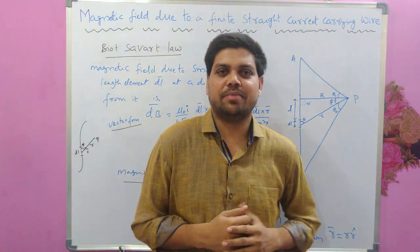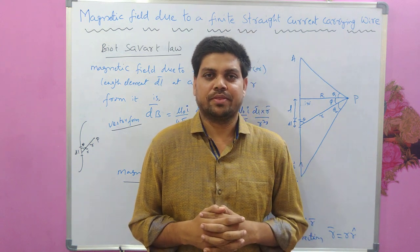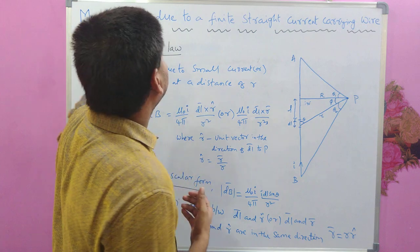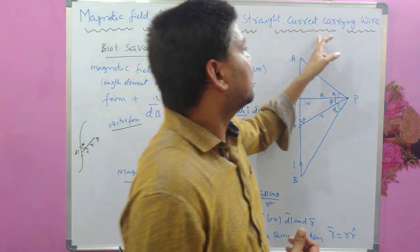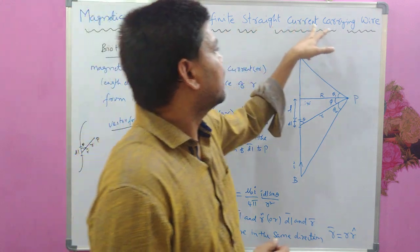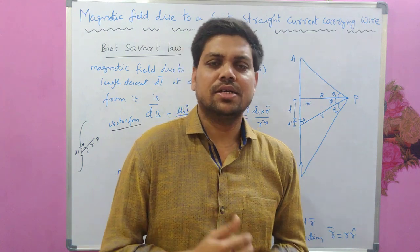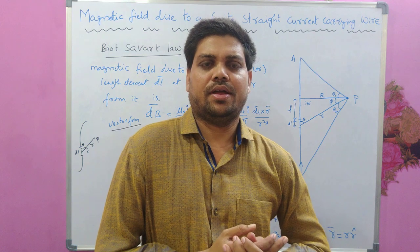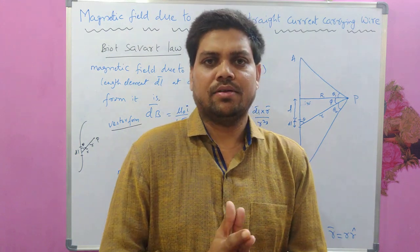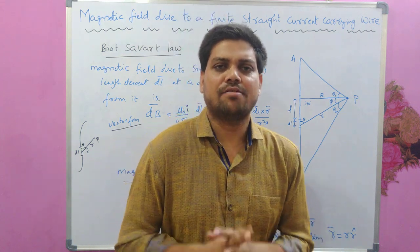Hi viewers, welcome back to our channel 'Passionate About Physics'. If you have not yet subscribed, please do subscribe. In this present video lecture, I am explaining the magnetic field due to a finite straight current-carrying wire — how much magnetic field is produced. We know that every current is a source of magnetic field; every current-carrying conductor will produce some amount of magnetic field in the space around it, which was discovered by Oersted.